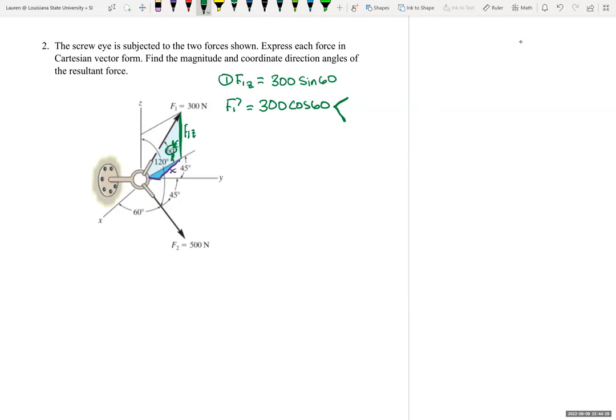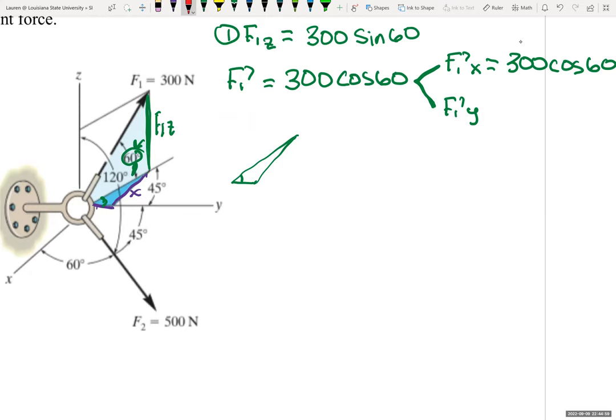All right, so F1 prime of X is equal to 300 cosine 60. So F1 prime of X is equal to 300, and it will be sine 45 because here's that angle, here's that triangle, here's our theta, here's our X or Y. X is across from that.